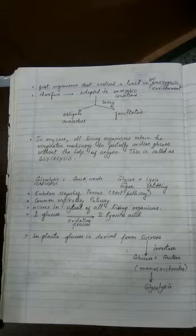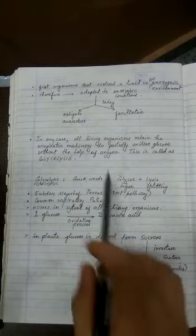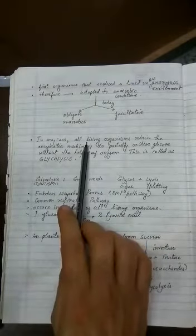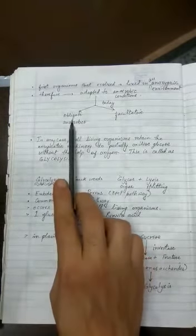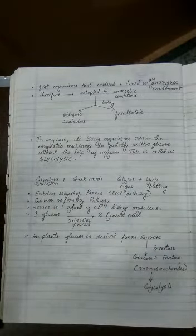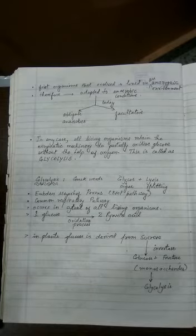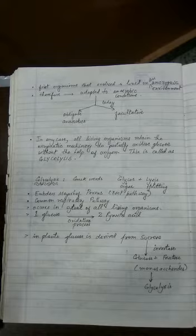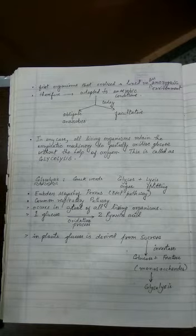In any case, all living organisms retain the enzymatic machinery. So whether we are prokaryote or eukaryote, whether we talk about obligates or facultative organisms, whether aerobic organisms or anaerobic organisms, we all retain one enzymatic machinery to partially oxidize glucose without the help of oxygen. And this machinery or mechanism is called glycolysis.